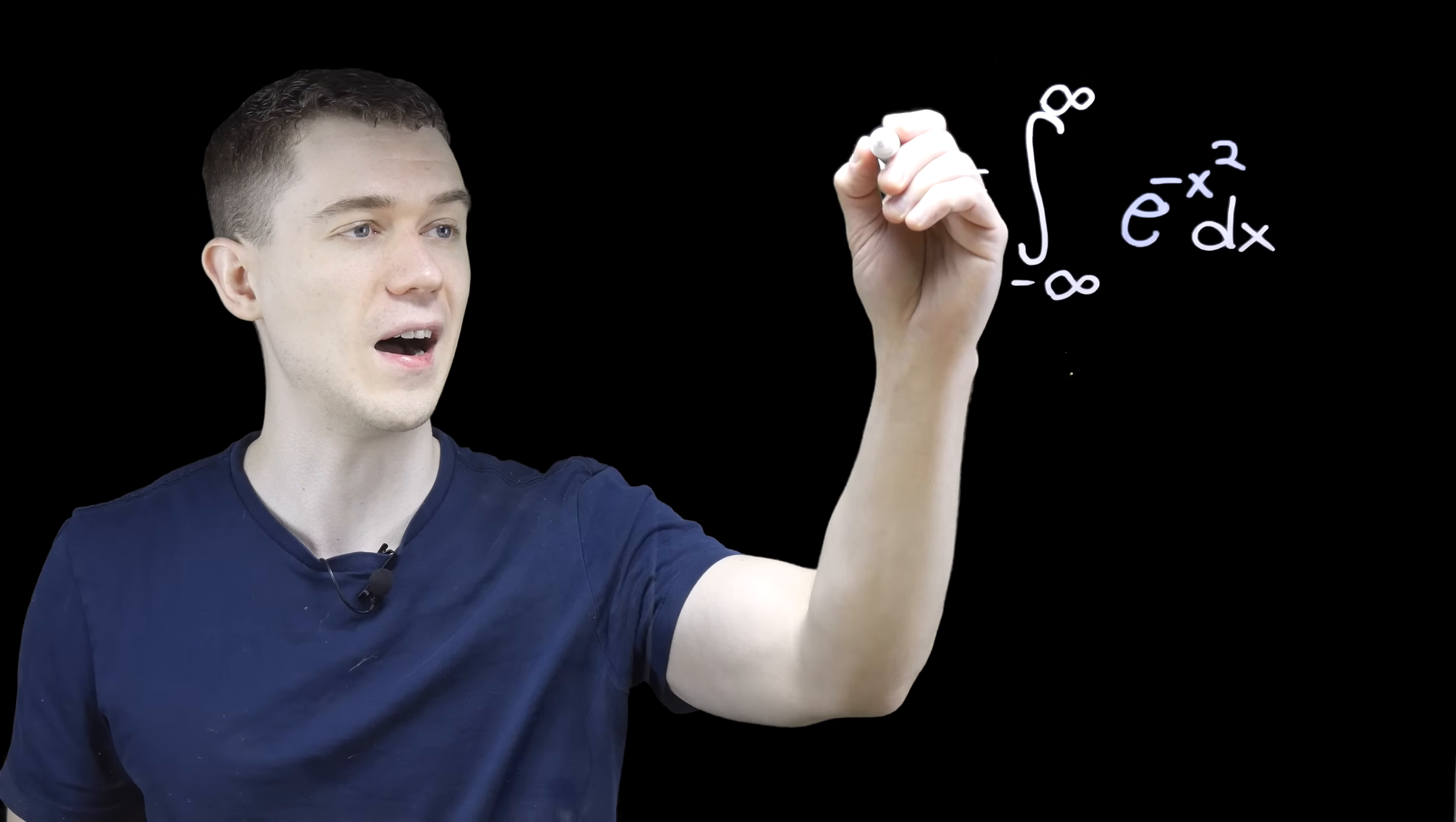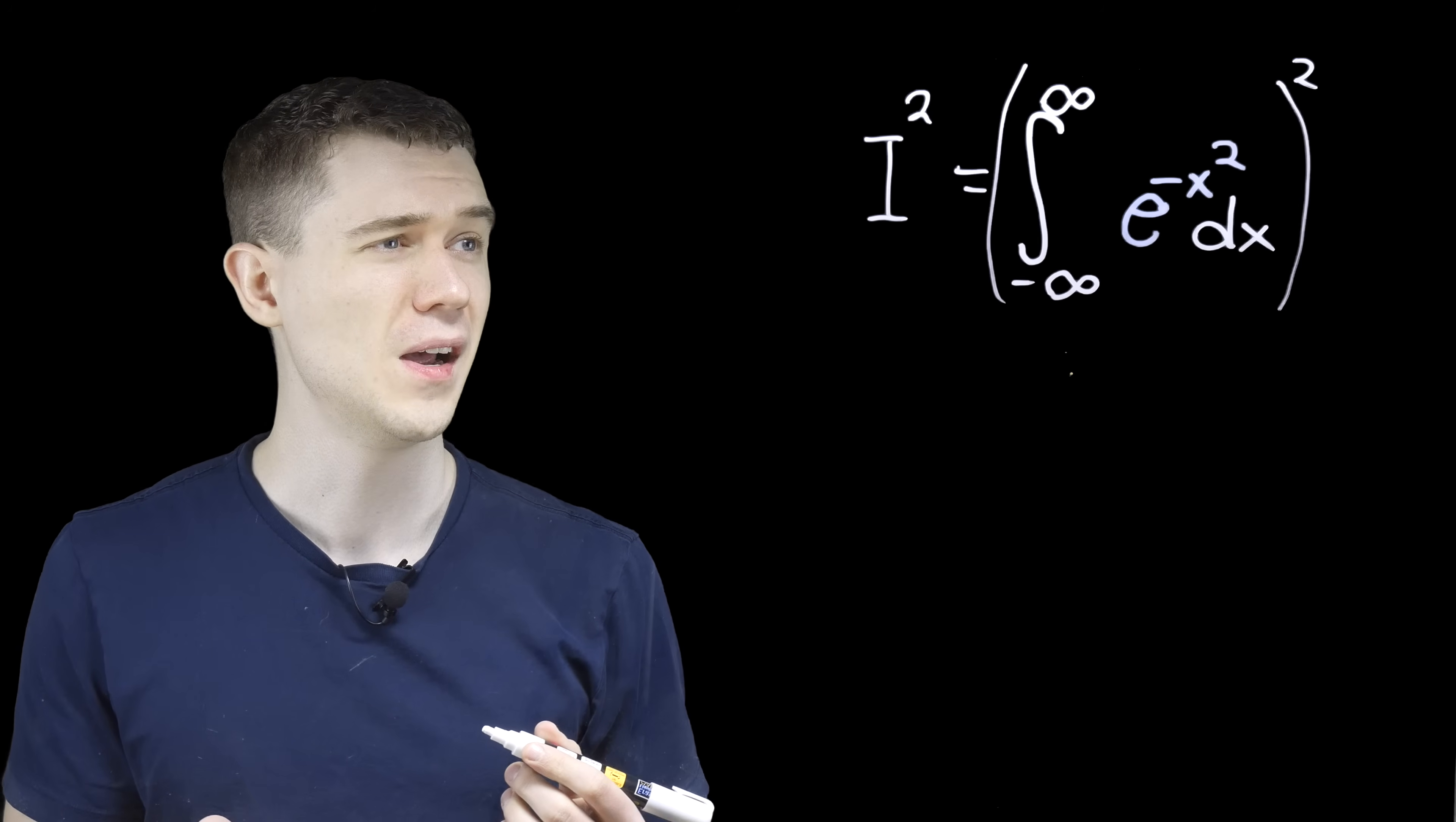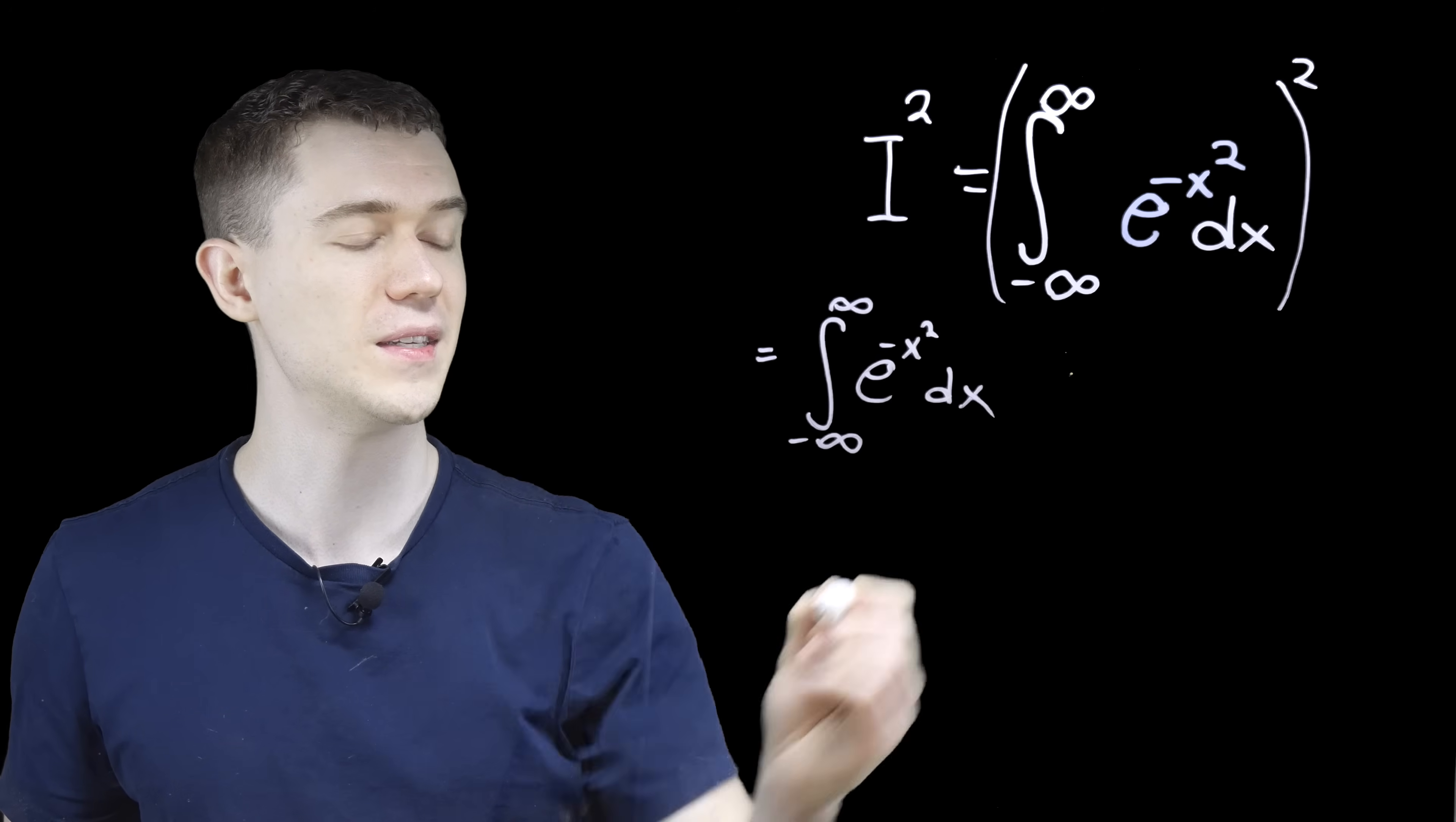We're going to just call this i, i for integral. And I'm going to square both sides of this equation. I'm going to square this entire integral. Not something you're used to doing, but what does something squared really mean? Well, it means times itself, so this just means the definite integral from minus infinity to infinity of this times itself.